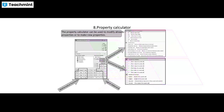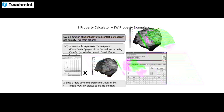The property calculator can be used to modify already-created properties or to make new properties. It includes all functions: statistical functions, geometrical functions, and mathematical functions. For example, water saturation (Sw) can be calculated as a function of height above the fluid contact, permeability, and porosity. There are two main options: a simple expression for above-contact properties from geometrical modeling, and an advanced expression where you load and run a file.